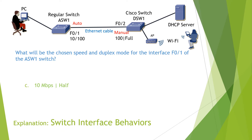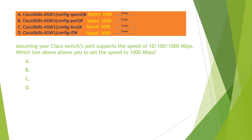Switch interface behaviors. The question reads: assuming your Cisco switch port supports speeds of 10, 100, and 1000 Mbps, which command allows you to set the speed to 1000 Mbps? In order to set the speed, you have to go to the interface configuration mode. Therefore, the answer for this question is D.